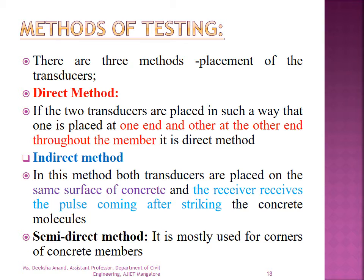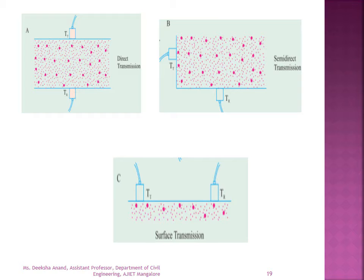There are three methods of testing: direct, indirect, and semi-direct. In the direct method, the two transducers are held on opposite faces of the concrete block — this is known as direct transmission. In the semi-indirect method, the transducers are held perpendicular to each other on two adjacent faces. In the indirect method, both transducers are placed parallel to each other on the same face — this is known as indirect transmission.